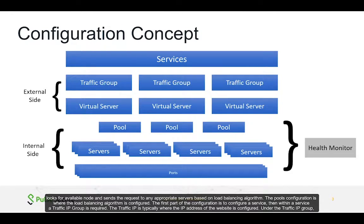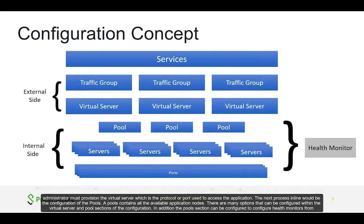The first part of the configuration is to configure a service. Then a traffic IP group is required — this is typically where the IP address of the website is configured. Under the traffic IP group, an administrator must provision the virtual server, which is the protocol or port used to access the application.